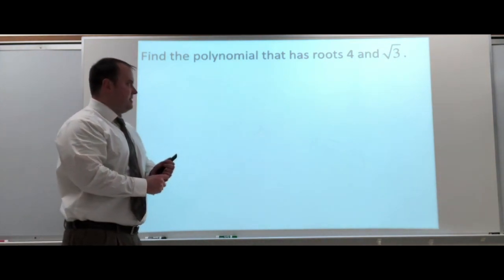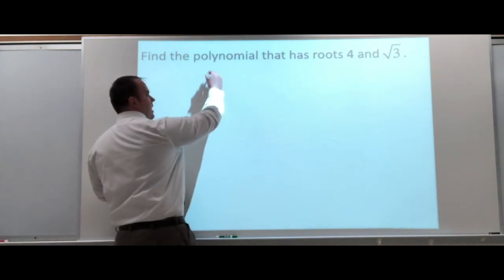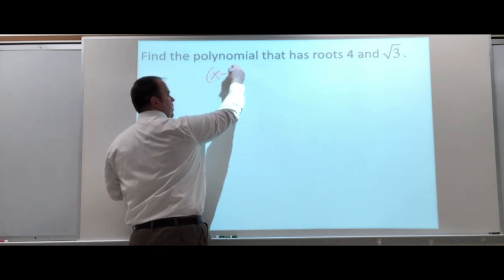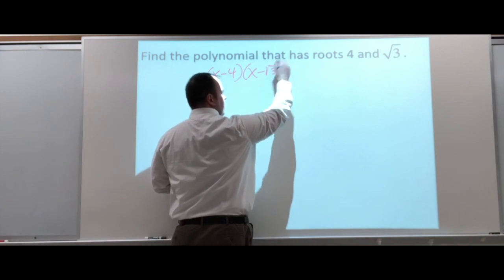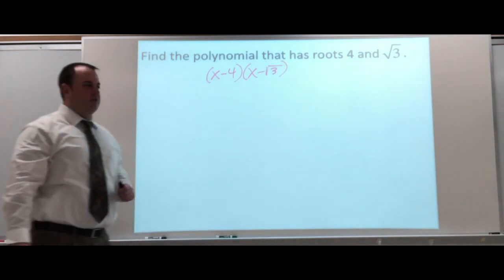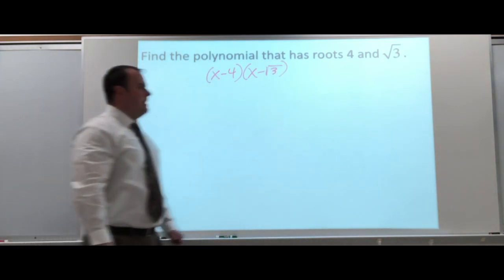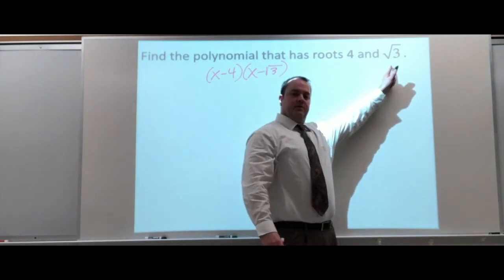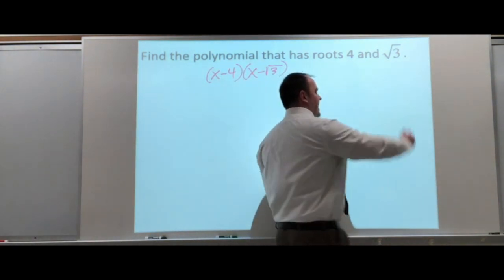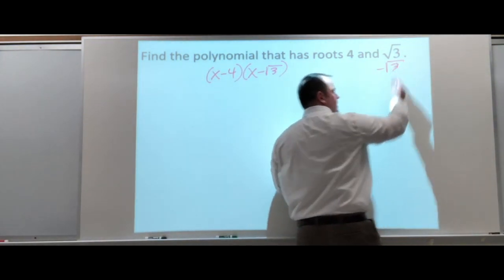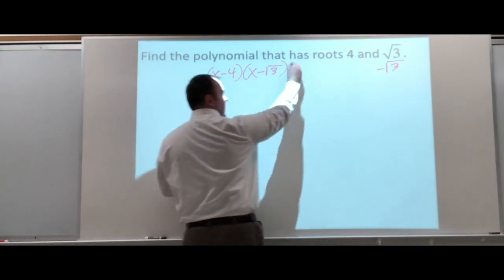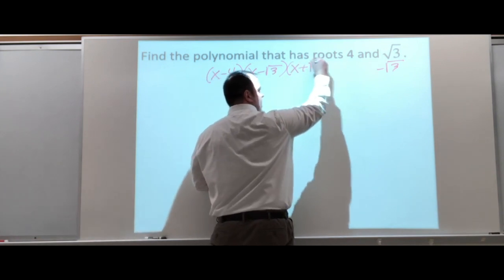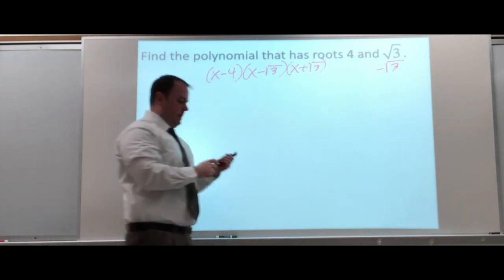Well, we could start off by setting this up. That means that we know X minus 4, X minus square root of 3 are two binomials that give us a solution. What we all have to remember is, if square root of 3 is a solution, that means that negative square root of 3 is also a solution. So, that means that X plus square root of 3 is needed here.